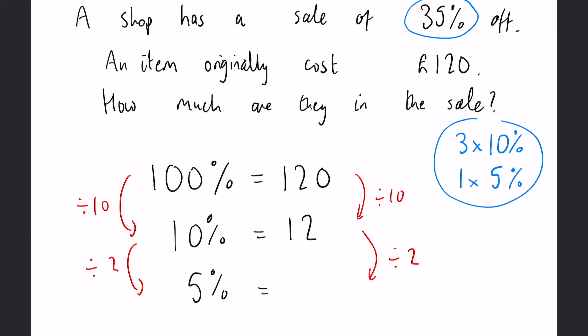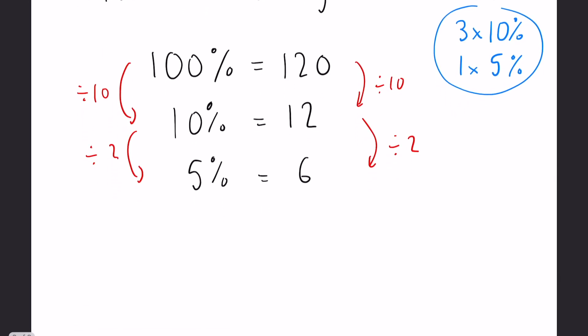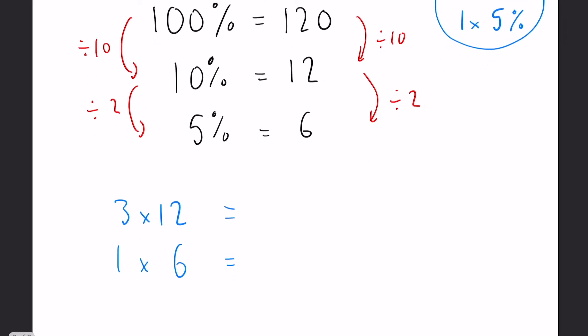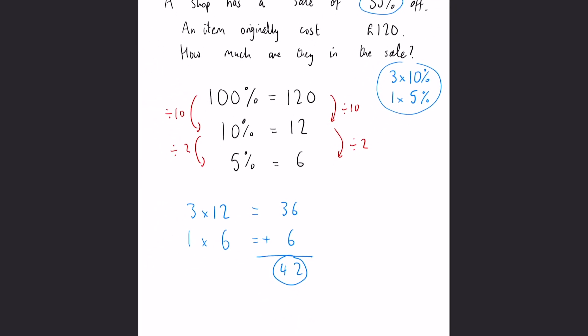Now remember how we need three lots of the 10% and one lot of the 5%, which is 6. So 3 times 12 gives us 36. 1 times 6 is obviously 6. Add those together to get 35% and we see that it's 42.